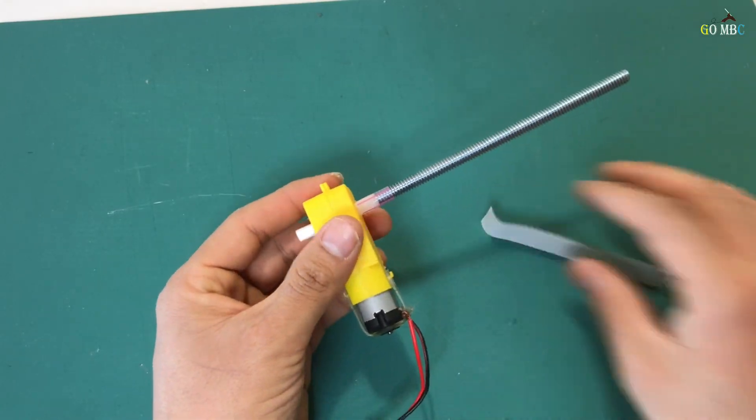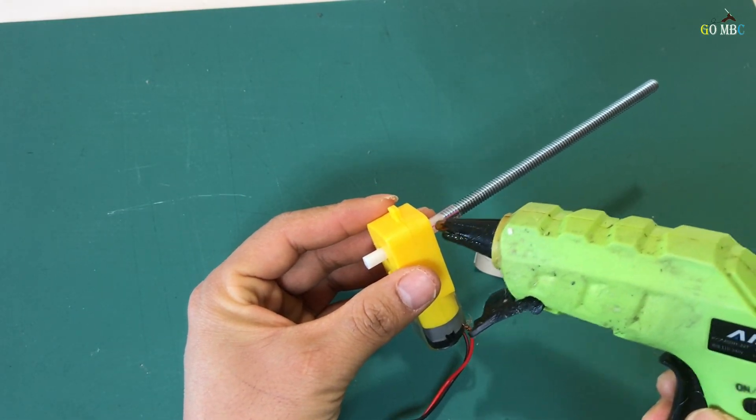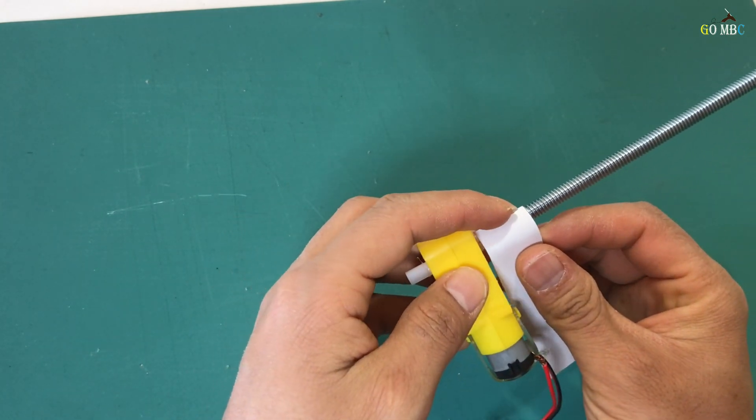Here I am wrapping the joints with the help of a small piece of paper. It makes the joint extra stronger.